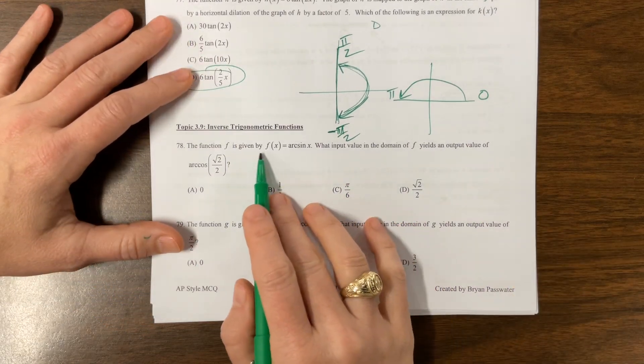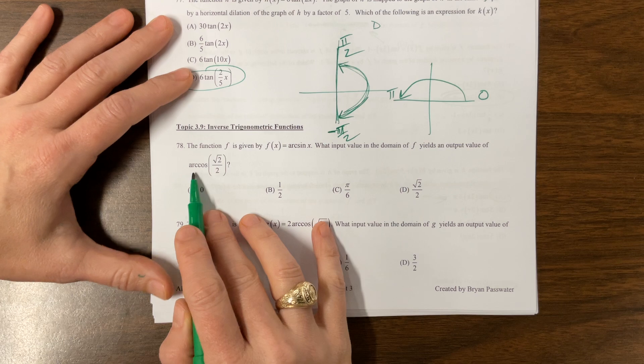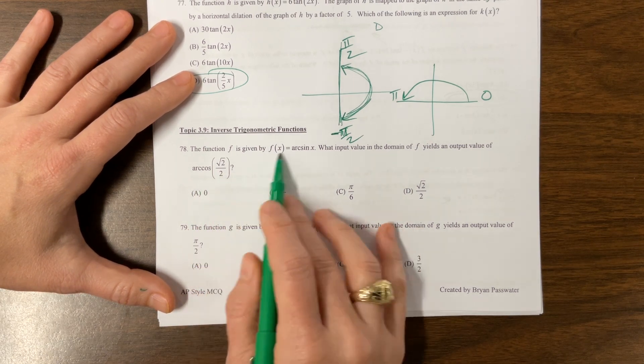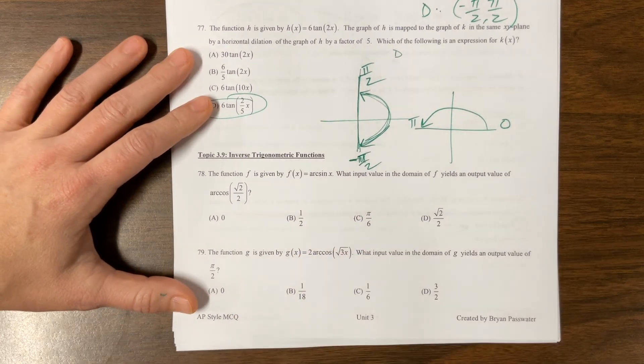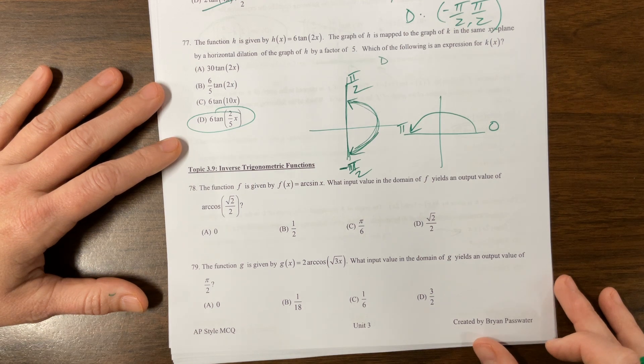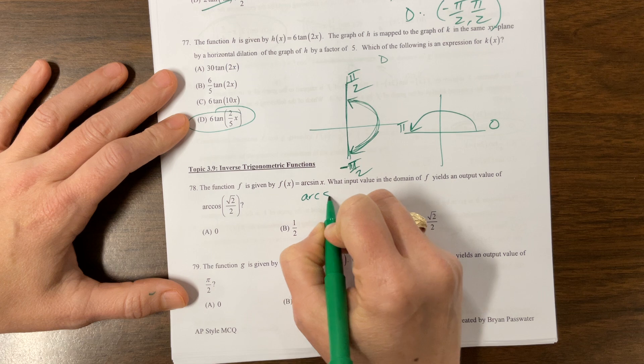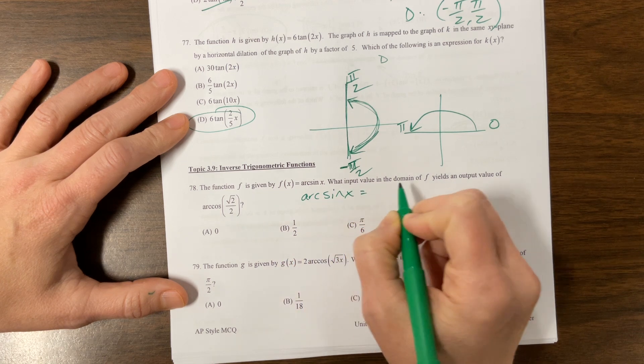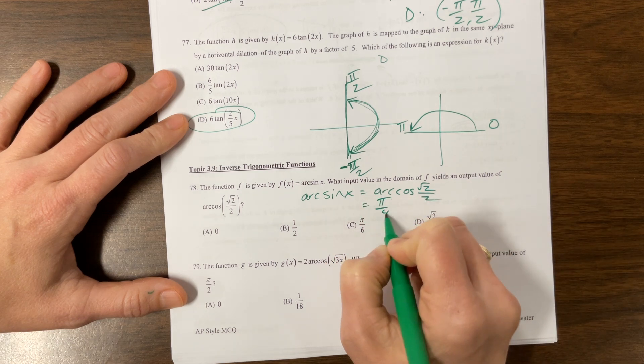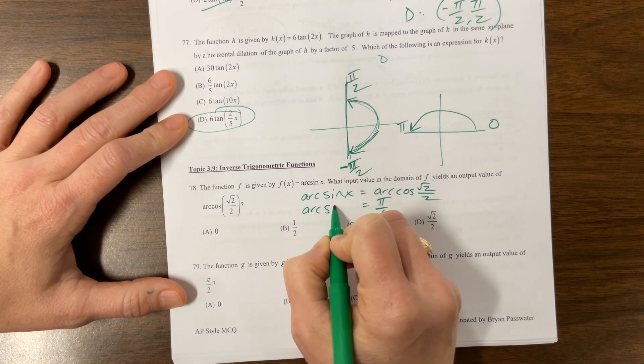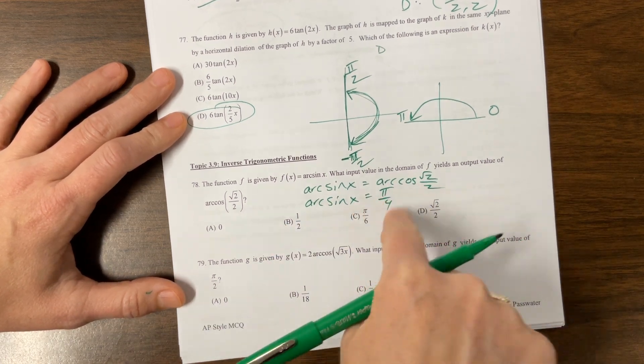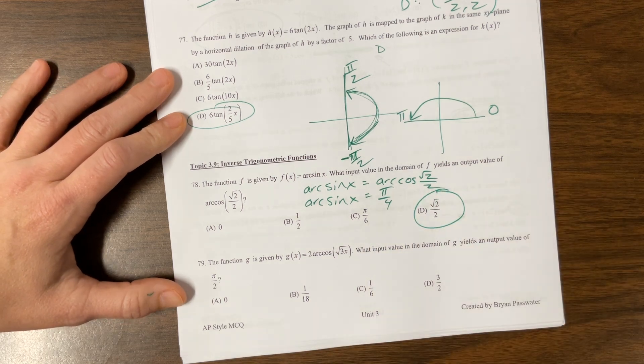So it says, here's our function. What input value in the domain gives us an output value of arc cosine? They're mixing arc sine and arc cosine. So basically what I would do, this is almost like some of the FRQ for part C that we were seeing. But what I would say is arc sine of x is equal to arc cosine of root 2 over 2. Well, arc cosine of root 2 over 2 is pi over 4. So now we're saying arc sine of x is equal to pi over 4. So how do I undo that? I take the sine of both sides. Sine of pi over 4 is also root 2 over 2, just like cosine of pi over 4.